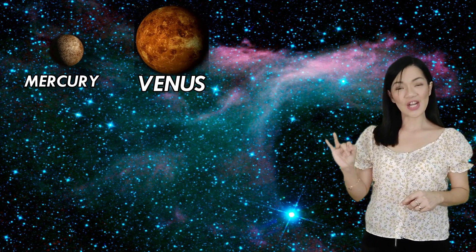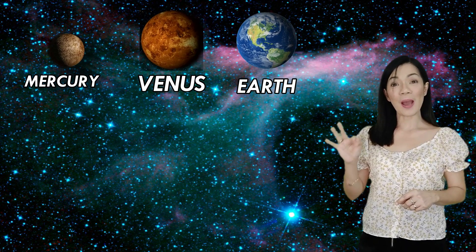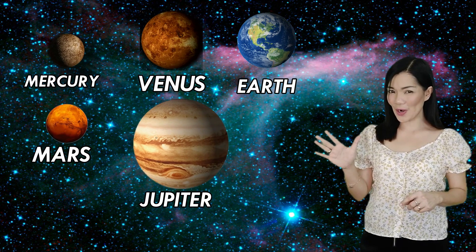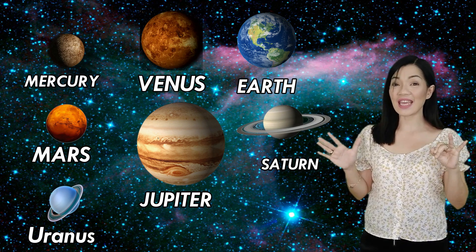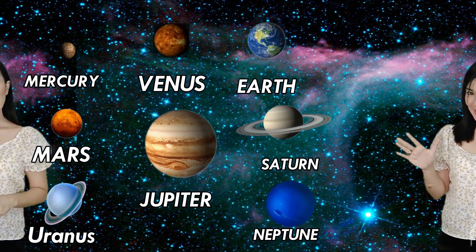And here are all eight primary planets. They are familiar now. Mercury, Venus, Earth, Mars, Jupiter, Saturn, Uranus, and Neptune.